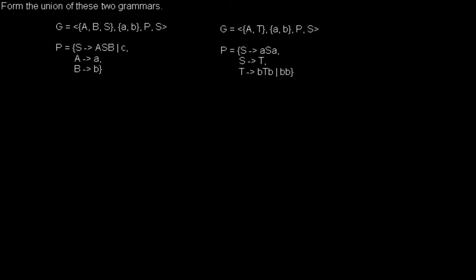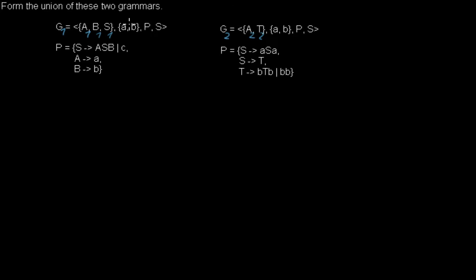The process is rather simple. First, I will form the union of the sets of the grammars. I will have to rename the things to not mix them up. So I will call this G1 and then I will rename the non-terminal symbols A1, B1, and S1. And this grammar I will call G2 and I will call the non-terminal symbols A2 and T2. That's because when I have the union of the two, I have to form the union of the two non-terminal sets and I don't want to mix the rules up.